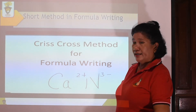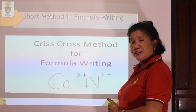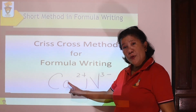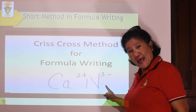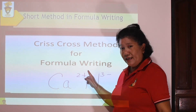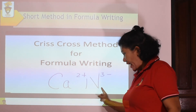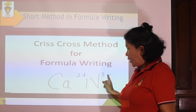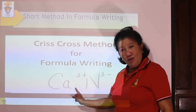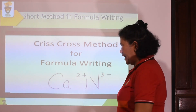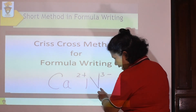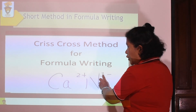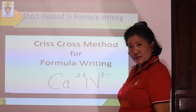There is a shortcut method in formula writing known as the Criss-Cross Method. The charge on your first element will be the number of atoms in your second element — without the positive sign, since it pertains to the number of atoms. And the charge on the second element will be the number of atoms in your first element. That is why it is called crisscross.